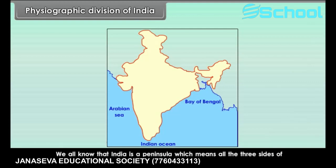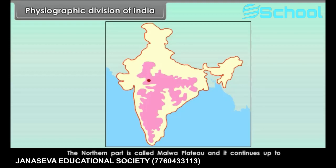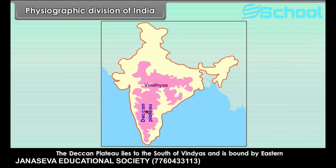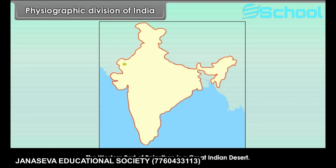India is a peninsula, which means all three sides of southern India are covered by water. The peninsular part of India is largely covered with a plateau — this peninsular plateau is the oldest block of India. The northern part is called Malwa Plateau, continuing up to Chota Nagpur Plateau. The Deccan Plateau lies to the south of the Vindhyas, bounded by the Eastern Ghats and the Western Ghats, and is flanked by narrow coastal plains. The western part of Rajasthan is the Great Indian Desert.